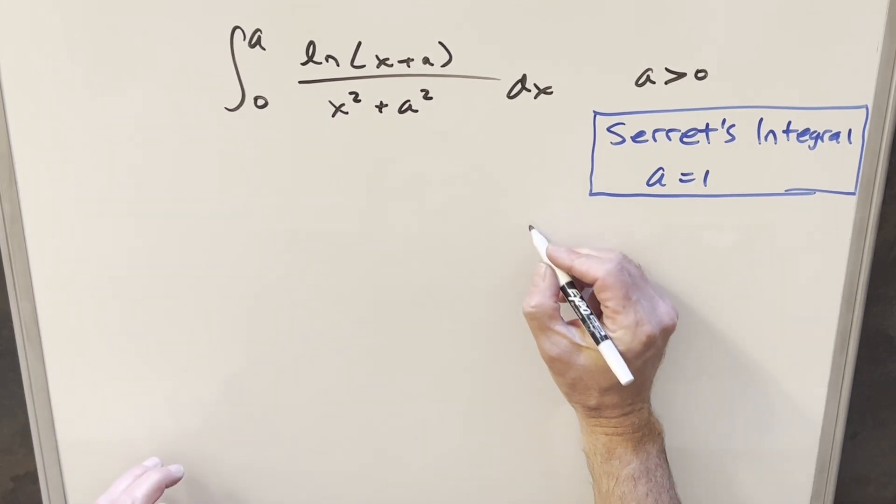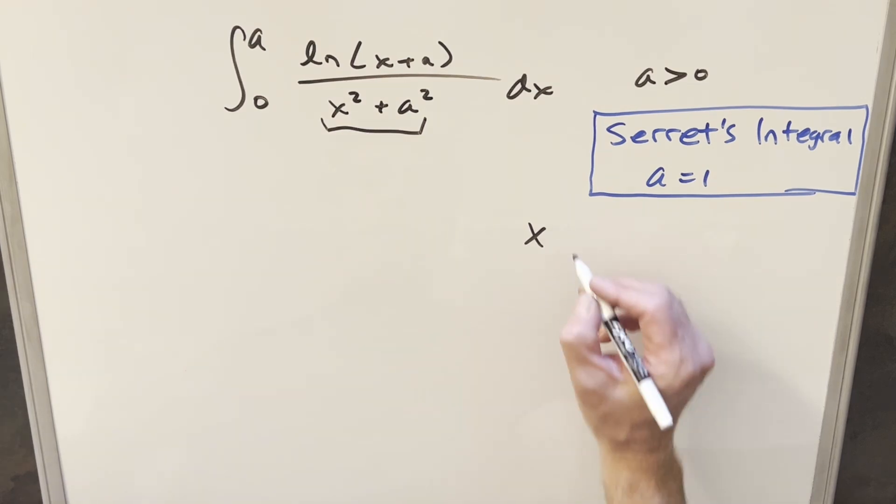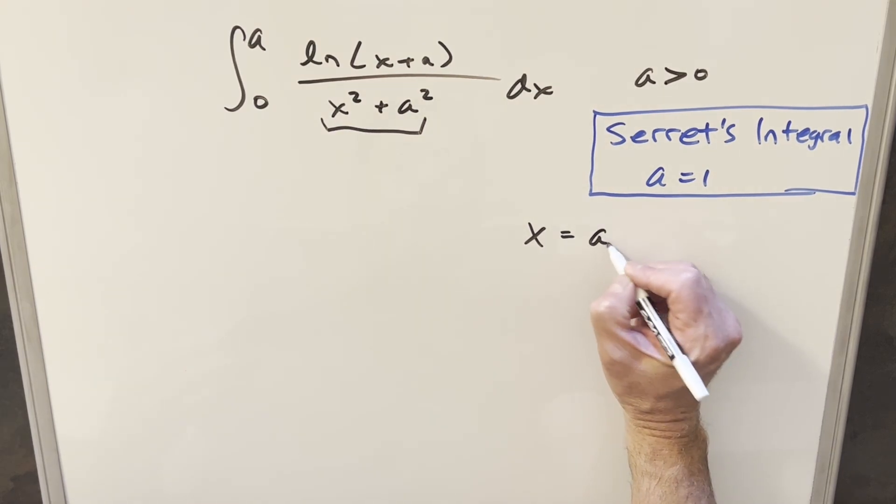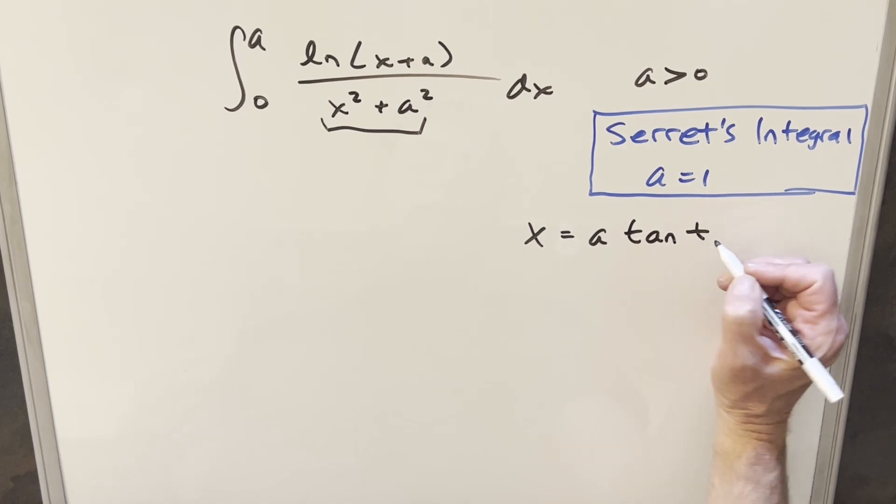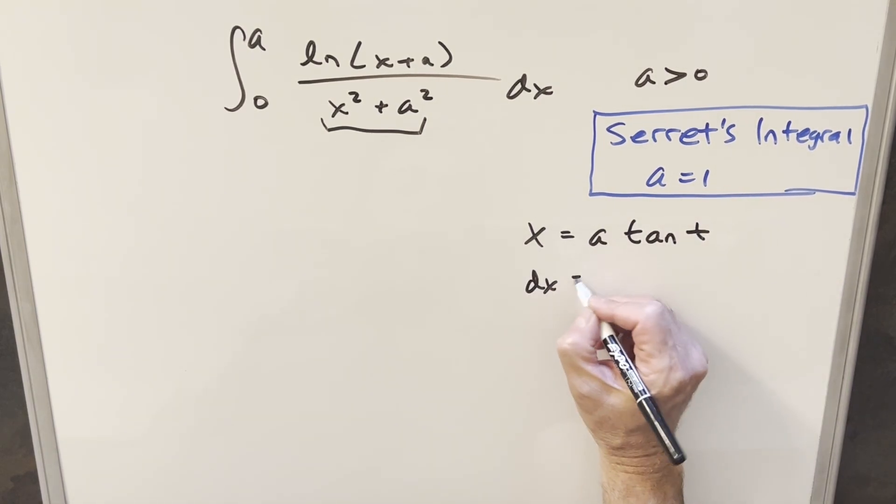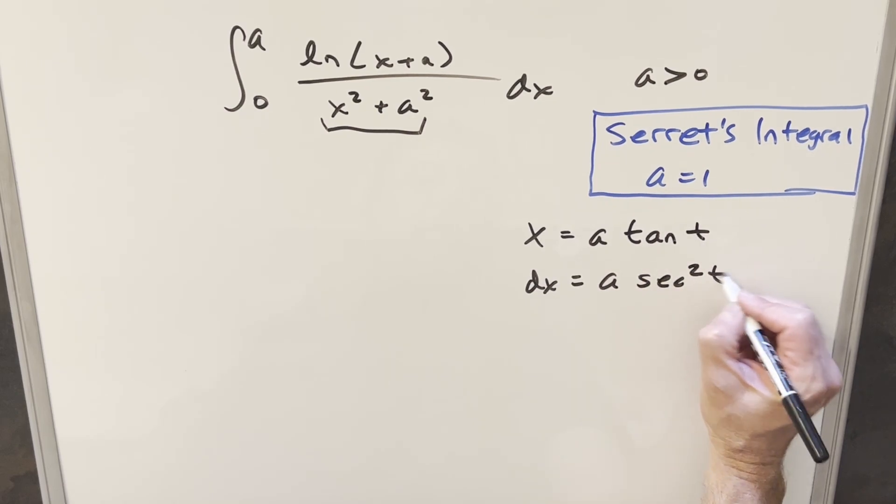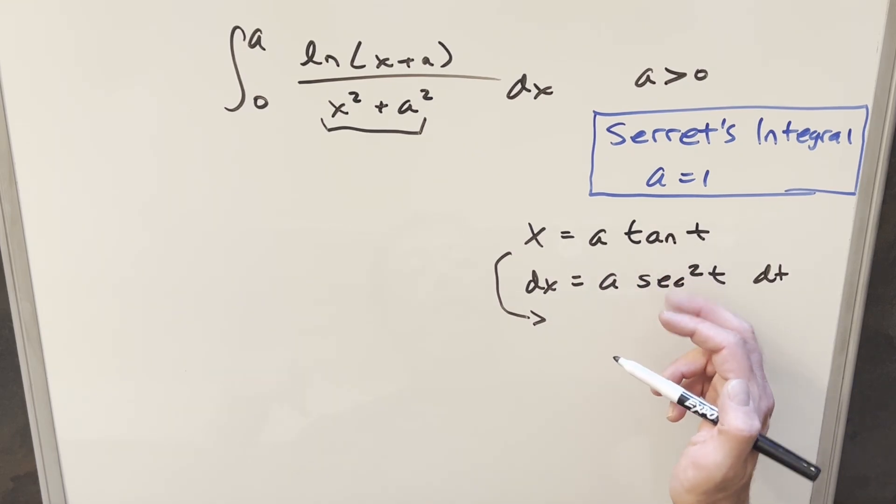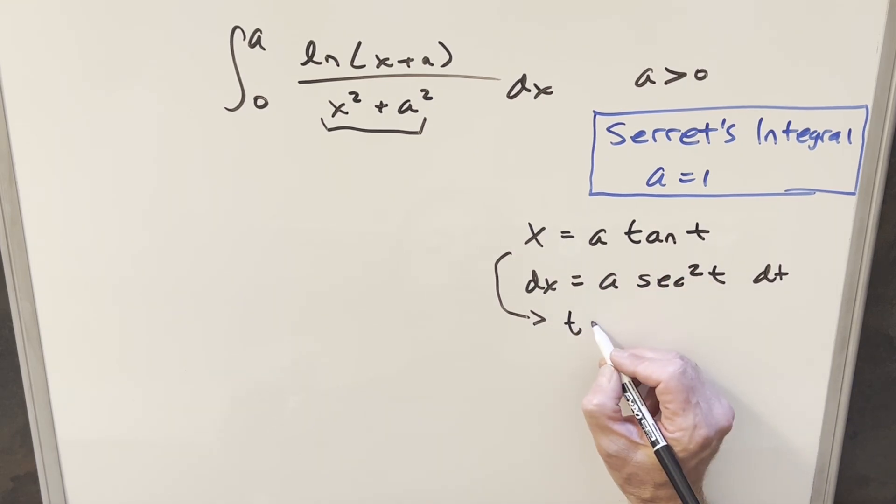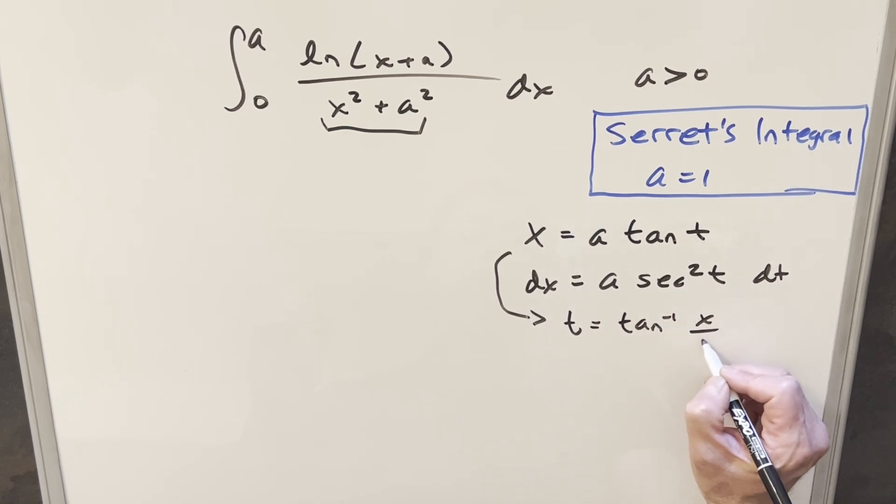For my first step, what I want to do is a trig substitution, noticing the situation where we have x squared here. Let's make the trig substitution using tangent. I'll set x equal to A tan of t. Let's take a derivative. For the dx value, we're going to have A secant squared of t dt. And let's also, while we're at it, get a value for t. If I divide by A here and take arctan on both sides, we can isolate t and we get t equal to arctan of x over A.